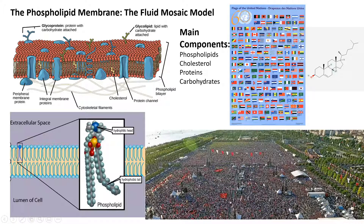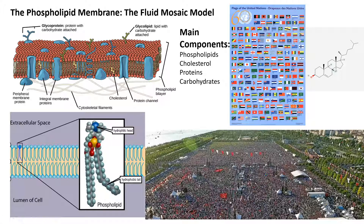Now imagine the phospholipids like the people — they are constantly moving and walking around and sliding past one another. This is the same for the proteins and the carbohydrates. Imagine that the tents and buildings are on wheels and that the cars are moving around. The phospholipids, proteins, carbohydrates, and cholesterol all move relative to one another.